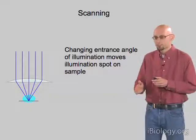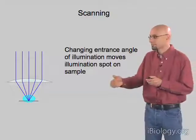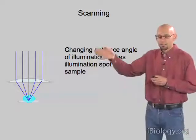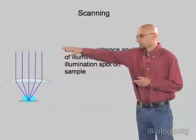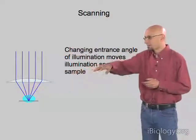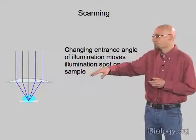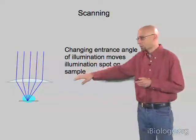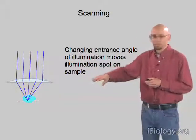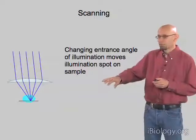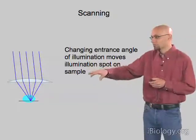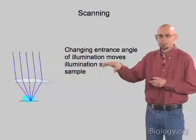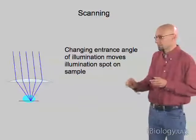It doesn't do us any good to just image a single spot in our sample — we want to have a grid of spots. To do that, we can change the angle of illumination as it enters the objective. If we come in with light perpendicular to the plane of the objective, it comes to a focus exactly in the center of the field of view. If we tilt that beam so it's coming at an angle, we move the focal spot off-axis, and so we can record from the left or right side of the sample. By changing the angle of illumination, we can move the illumination spot across the sample.